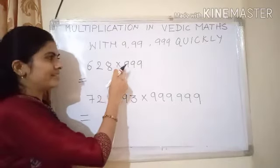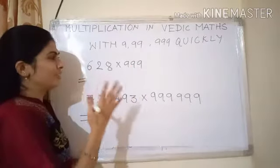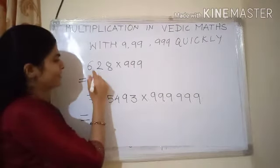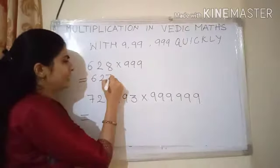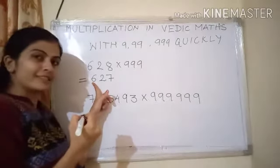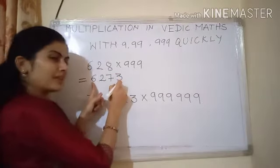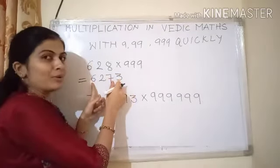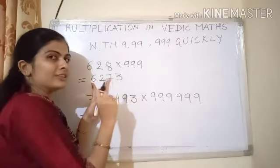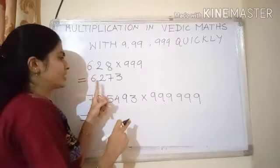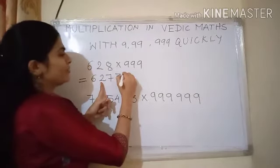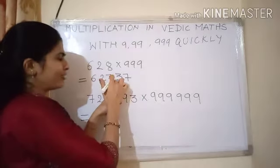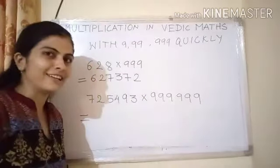628 into 999. You need to do what we will do. Write these 2 digits as it is. Reduce this digit by 1. It means 7. Now what is its 9's complement? 9's complement is 3 because 6 plus 3 is 9. This 9's complement concept is already given in the basic rules of the subtraction, which is given in the description box. What is the 9's complement of 2? 7. What is the 9's complement of 7? 2. This is the final answer.